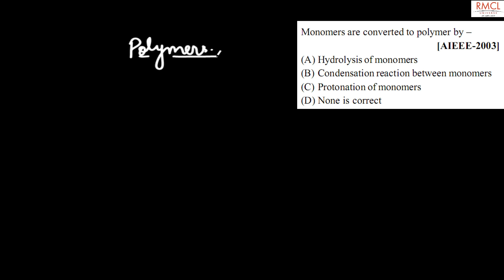The given question asked in AIEEE 2003, the question is: monomers are converted to polymer by.